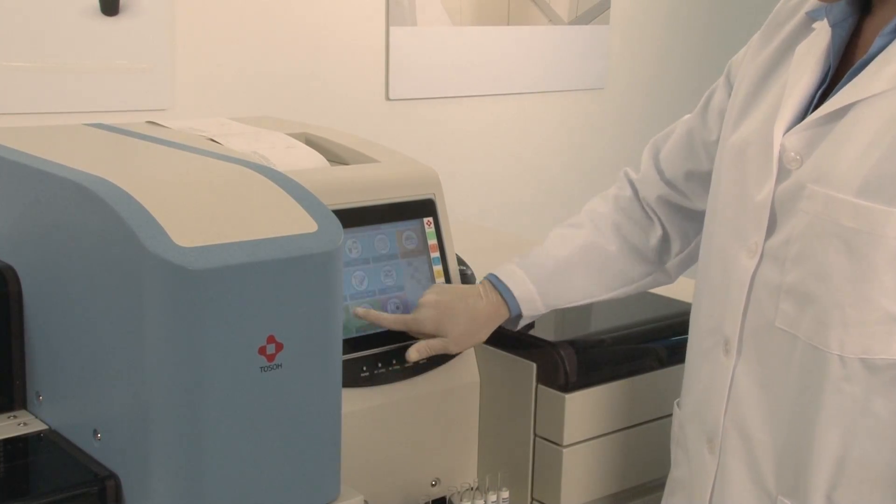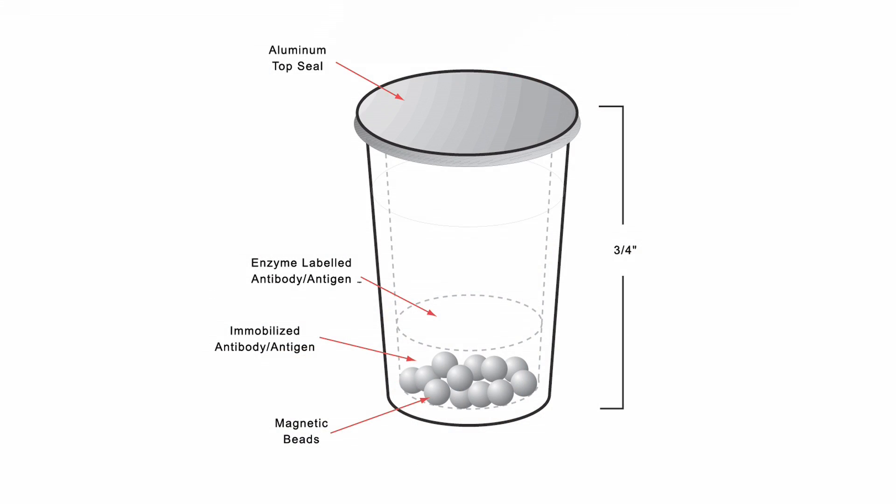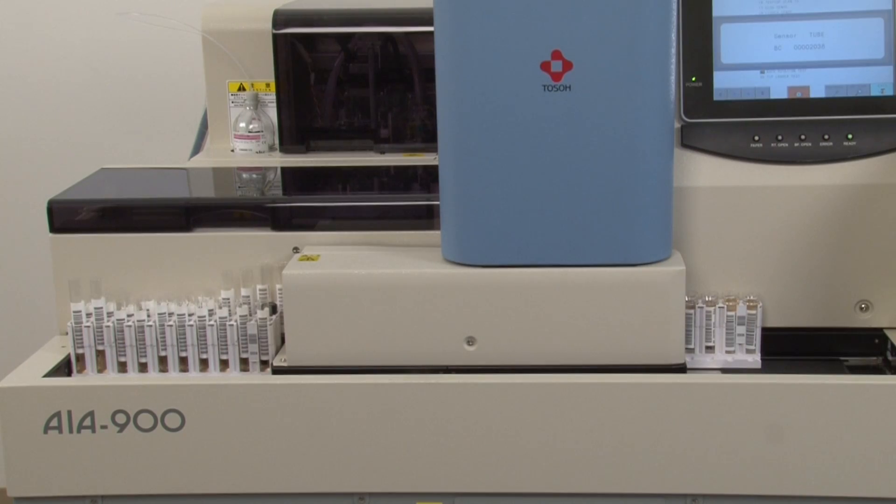The AIA 900 still uses TOSO's unique test cup immunoassay format and has increased throughput to 90 tests per hour.